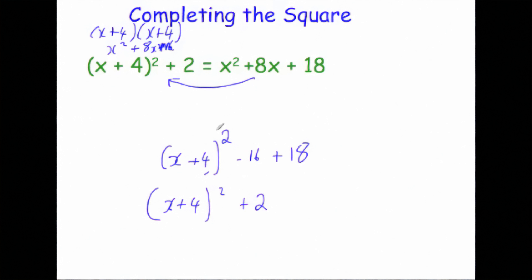To recap: we had x squared so we put x. Then we looked at the number in front of the x, which was 8, halved it and put it inside the bracket, then wrote squared. Then we take away that number squared — because it's 4, that squared is 16, so we take away 16. Then you just put the constant on the end. That's how you do completing the square.